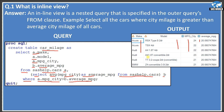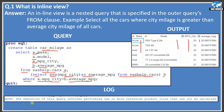There is a small problem here. The log says the execution involves performing one or more Cartesian product joins that cannot be optimized. A Cartesian product occurs when all rows of two or more tables join with each other — which is not good and cannot be optimized. This happens because we are using two tables without any explicit join, just a filter condition based on each other's tables, so a Cartesian product is created.